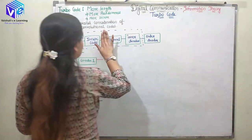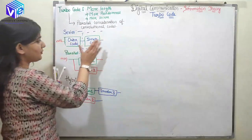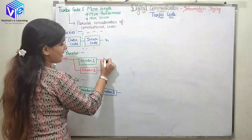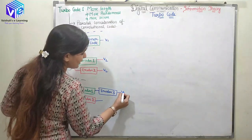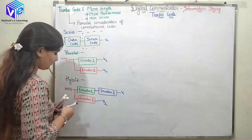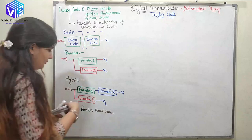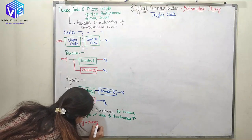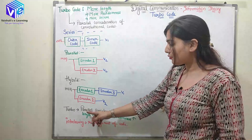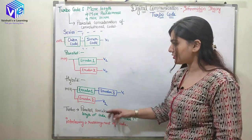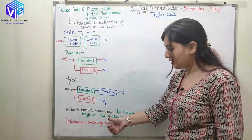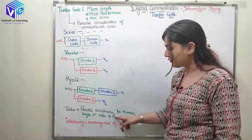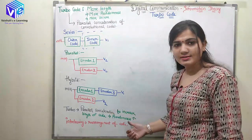In series connection the encoded signal will have just one output V1. In parallel I have two outputs V1 and V2. In hybrid also I have two outputs V1 and V2. In turbo coding we are taking the parallel concatenation to increase the length of the code. With the help of this I will get V1 and V2, which increases the randomness in the code.